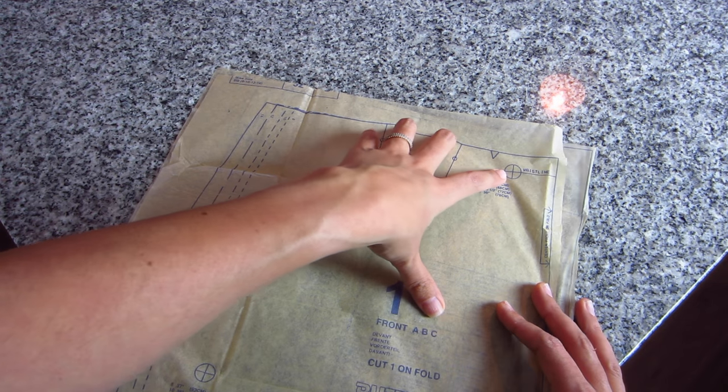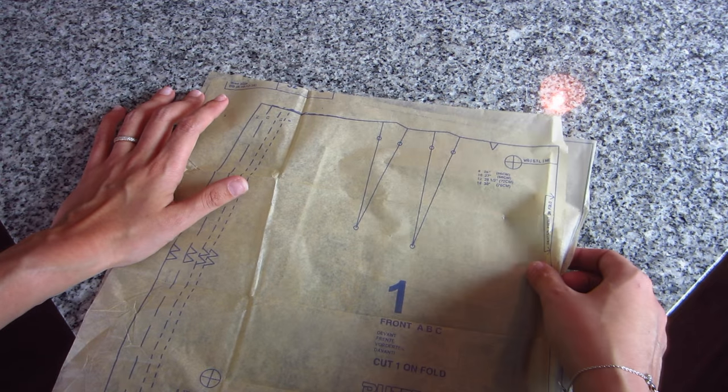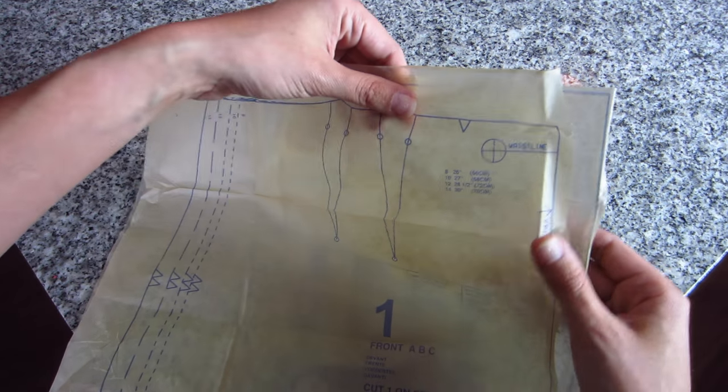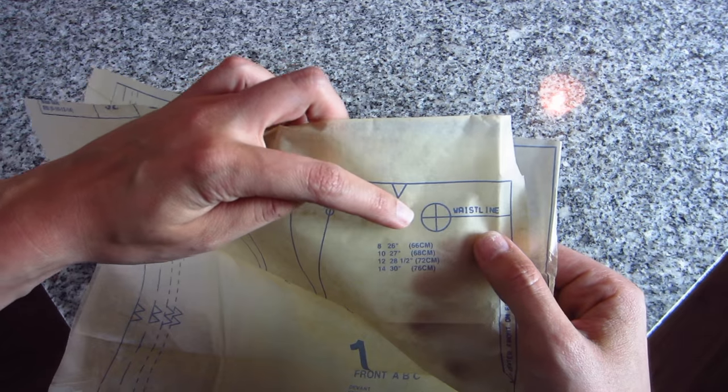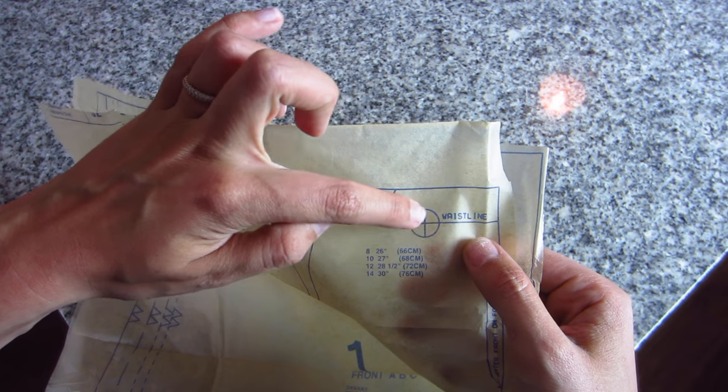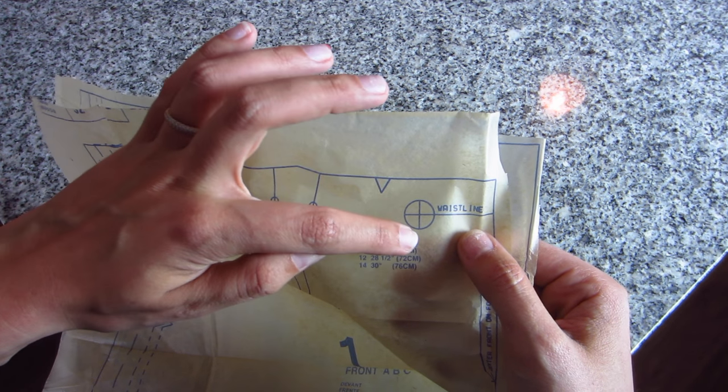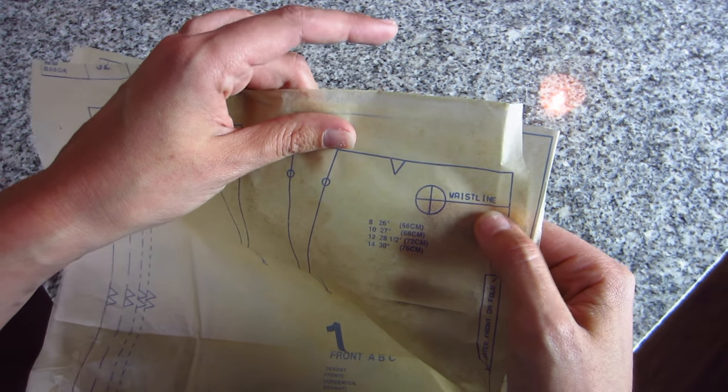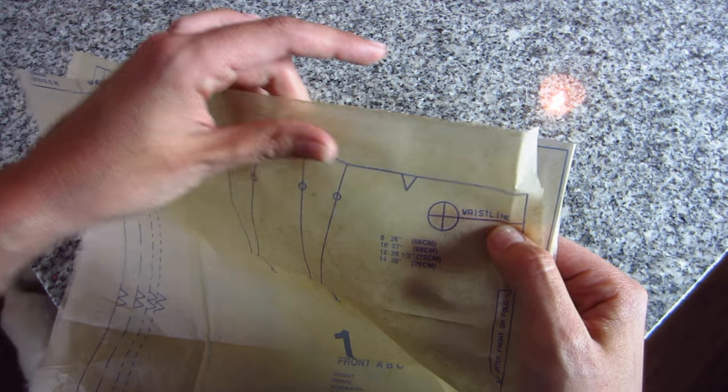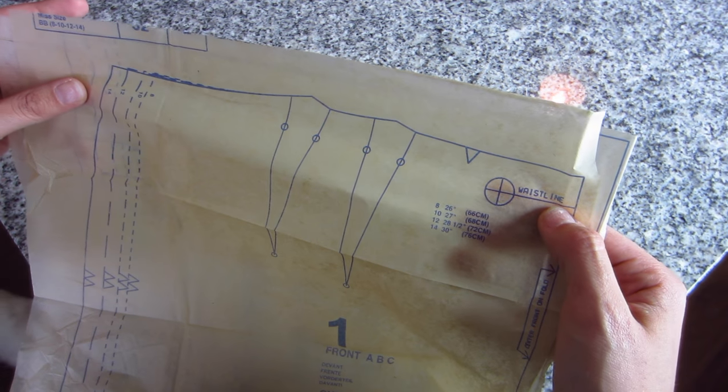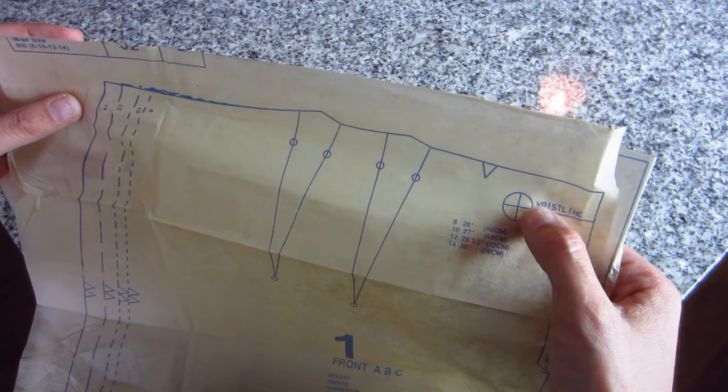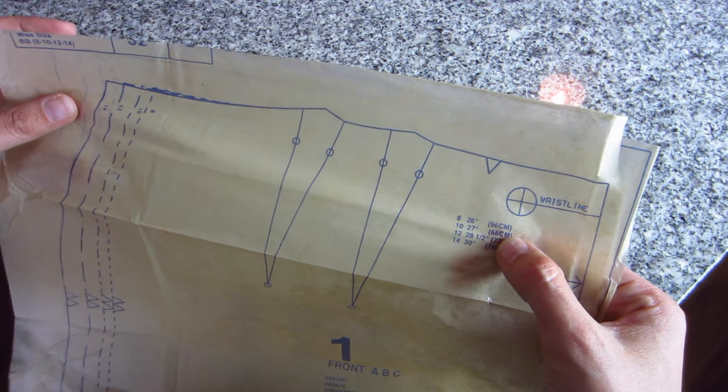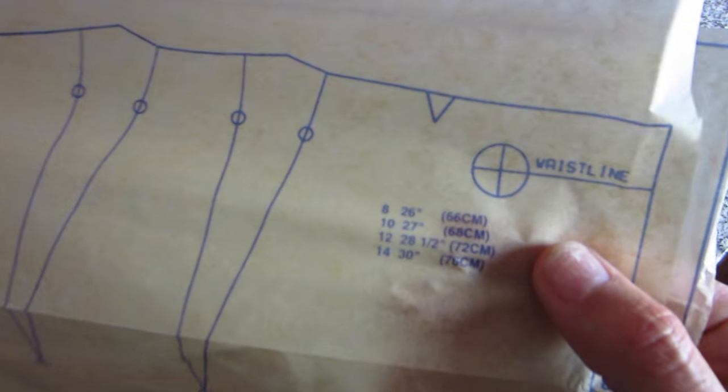You'll remember when we were talking about the pattern instruction booklet that it notated some information about this little icon here, kind of like a bullseye, the circle with the cross through it. That notates exactly where the garment will hit your waistline, and anytime you see the bullseye looking thing, you also know that they are going to provide you with some measurements.